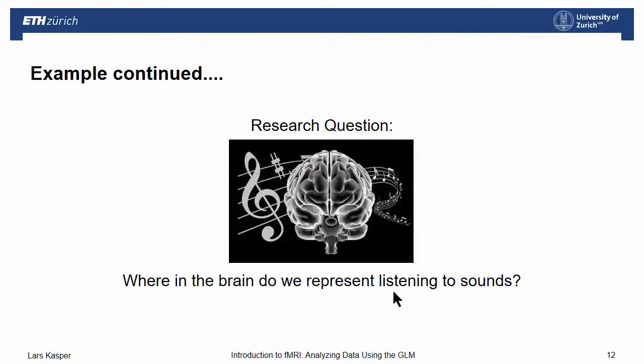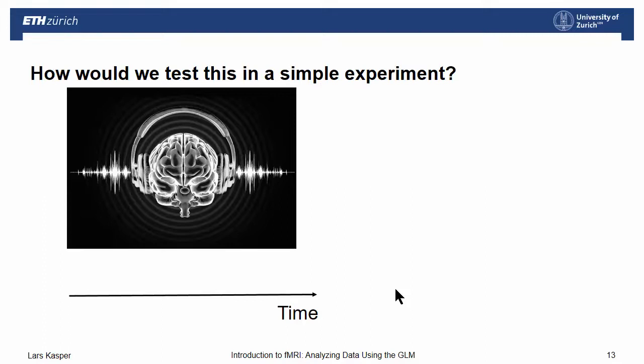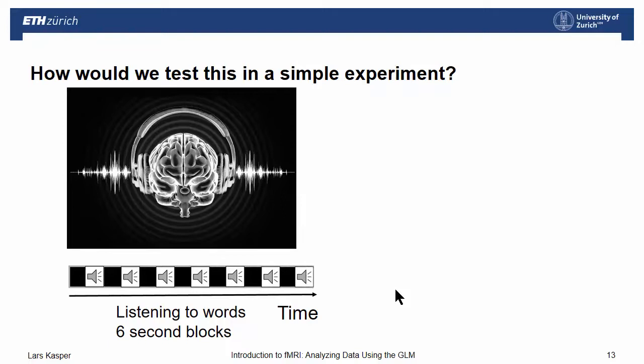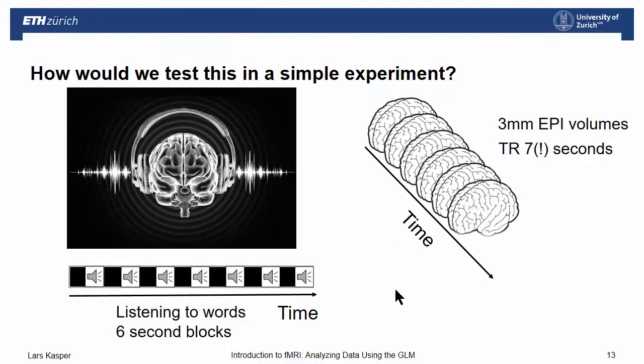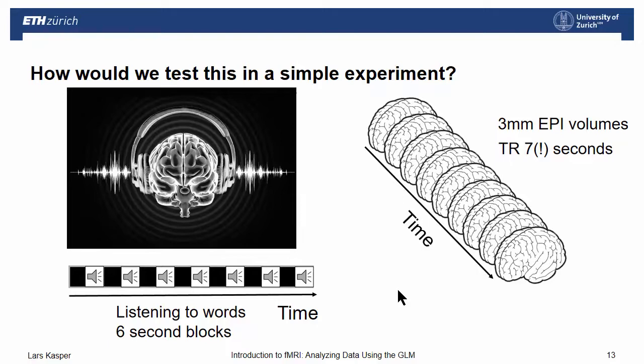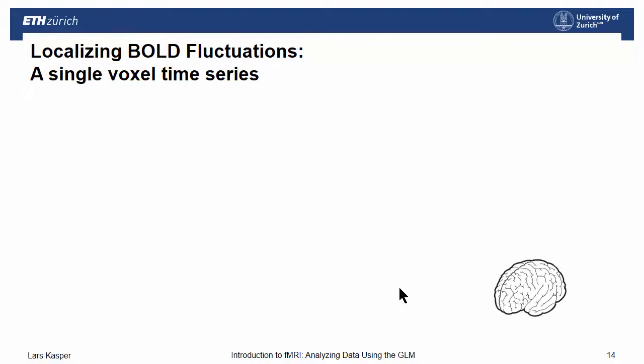So let's continue that example. So the research question originally was, where in the brain do we represent listening to sounds? And if you think about how would you test such an experiment, the first thing that might come to your mind, I just play blocks of words that subjects have to listen to, and some rest periods in between. Then I acquire fMRI data, typical EPIs with 3mm volumes, and we would have to define what we mean by localized time series. And typically that is given by our acquisition, and we're looking at voxel, so 3D pixels, and how the intensity changes over time.